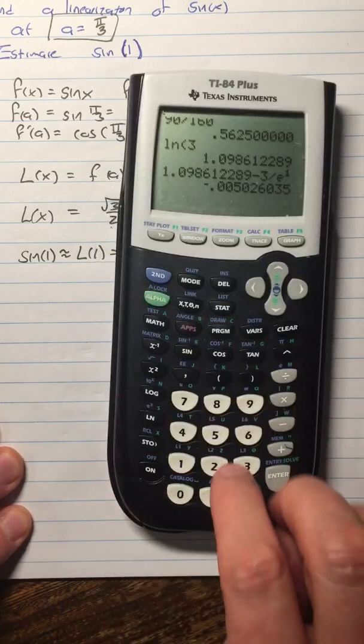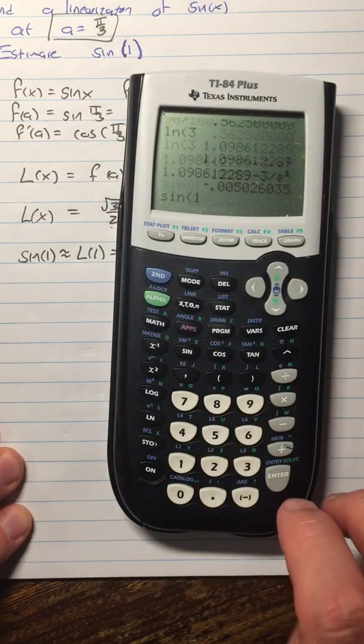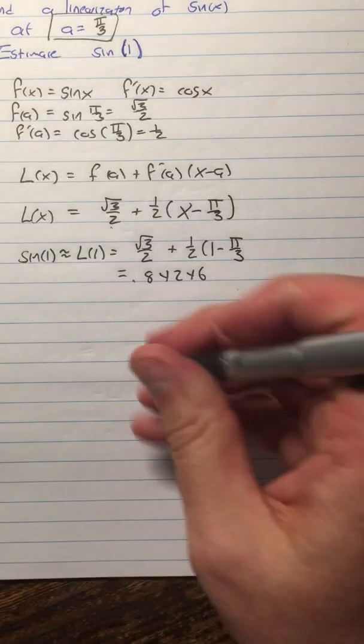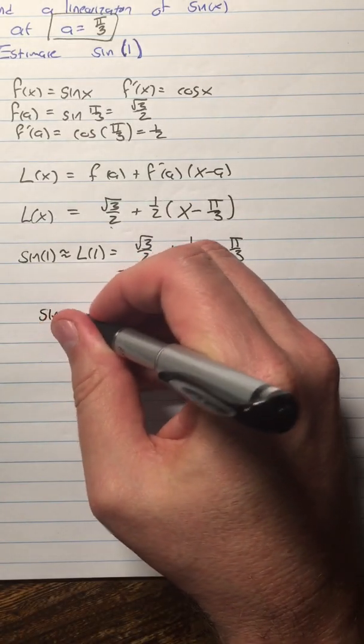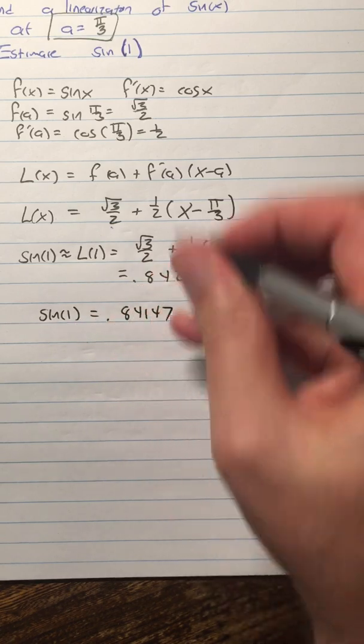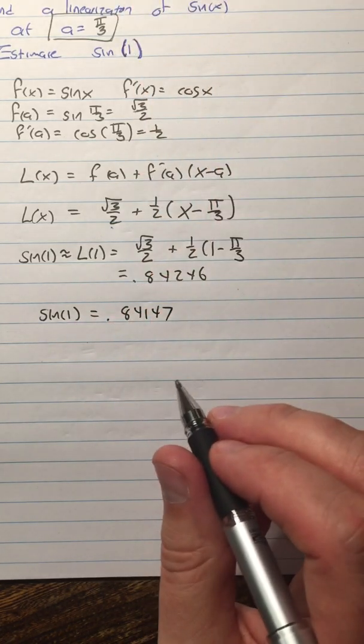Sine of 1 is 0.84147. So, in this case, I didn't ask what the error was, but your book's going to.